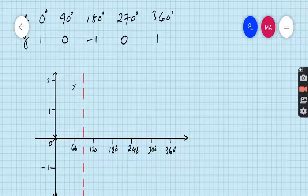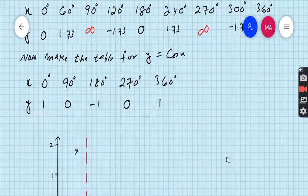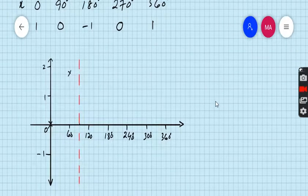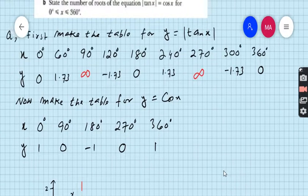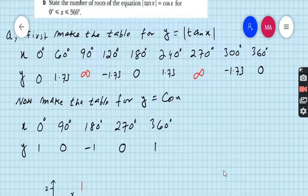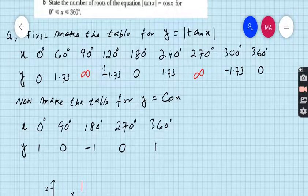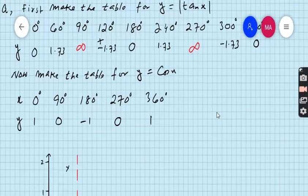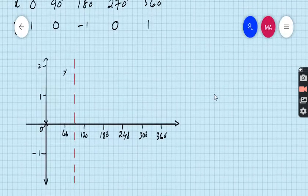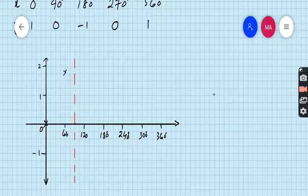Now for 120 degrees, the value is minus 1.73. So this is 1.73. So this minus should be converted into plus. For 120 degrees we should draw 1.73, so 120, 1.73 is this.